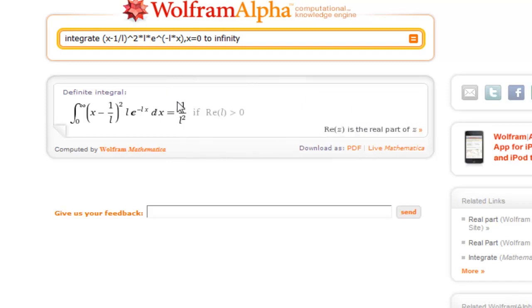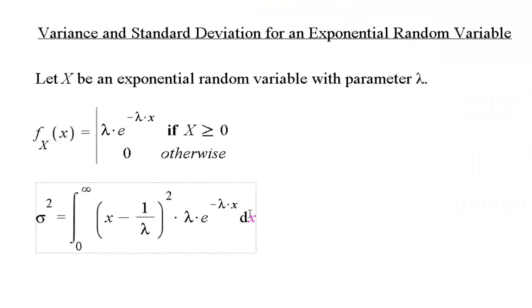We have 1 over lambda squared. This equals 1 divided by lambda squared, or we can write the squared outside the fraction. That's our variance.